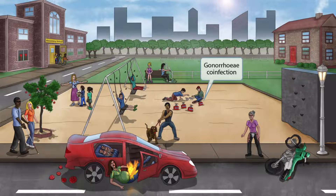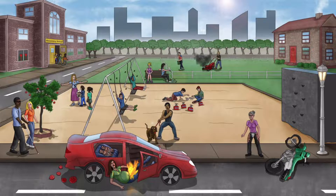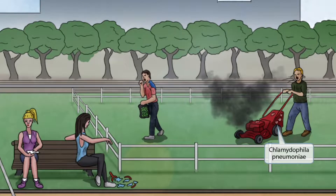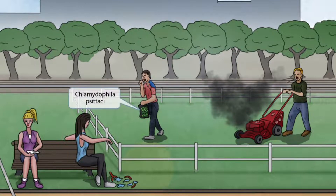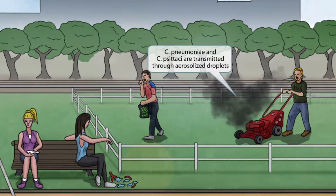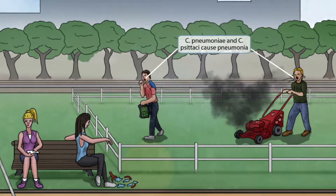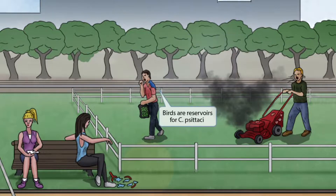Now let's briefly discuss Chlamydophila pneumoniae and Chlamydophila psittaci, represented inside the fence. One person is using a new lawn mower with clams as a logo — new mower sounds like pneumonia, and the clams logo indicates this is about Chlamydophila pneumoniae. The other guy inside the fence is carrying a bag of pistachios, which sounds like psittaci, representing Chlamydophila psittaci. Smoke coming from the mower indicates that both Chlamydophila psittaci and Chlamydophila pneumoniae are transmitted through aerosolized droplets. Both guys begin to cough, helping you remember that both organisms cause pneumonia. A blue bird on the pistachio guy's shoulder indicates that birds are reservoirs for Chlamydophila psittaci.